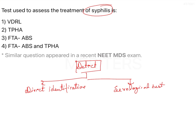In the case of direct identification of the causative organism, Treponema pallidum, there will be direct microscopy, direct antigen detection test, and direct PCR involved.